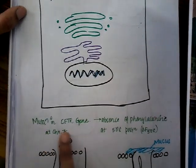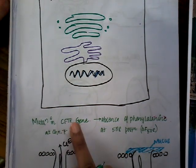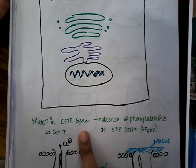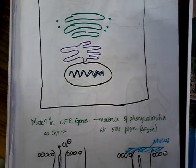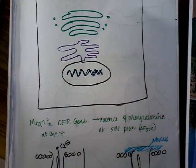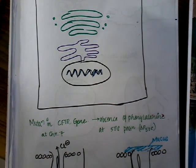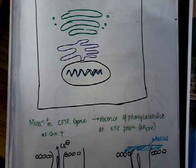Cystic fibrosis is an autosomal recessive disease. There is a mutation in CFTR, which is the cystic fibrosis transmembrane regulator gene, located on chromosome 7. The specific mutation is the absence of phenylalanine at position 508, known as delta F508.